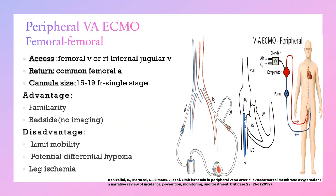For peripheral veno-arterial ECMO, starting with femoral-femoral: the drainage cannula will be in the femoral vein and the return cannula will be in the femoral artery. Sometimes drainage can be from the internal jugular vein with return to the femoral artery. Cannula sizes range from 15 to 19 French in single stage. Its advantages are familiarity and the ability to be performed by a single operator without requiring imaging. The disadvantage is limited mobility and differential hypoxemia.